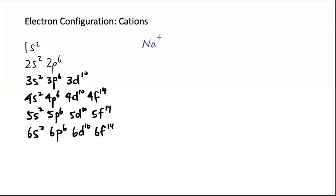Electron configuration cations. So in here we have Na plus, sodium ion, and if we want to write out the electron configuration we must write out the original first.